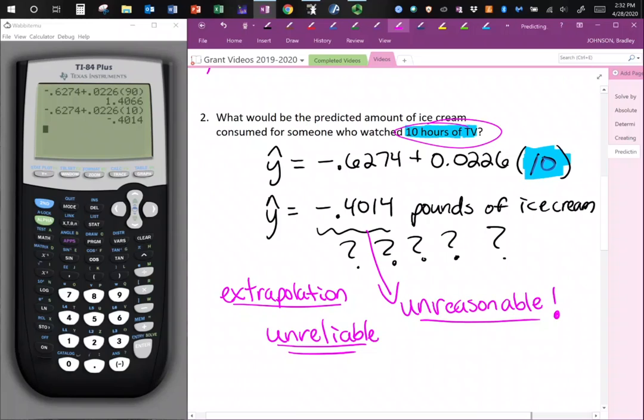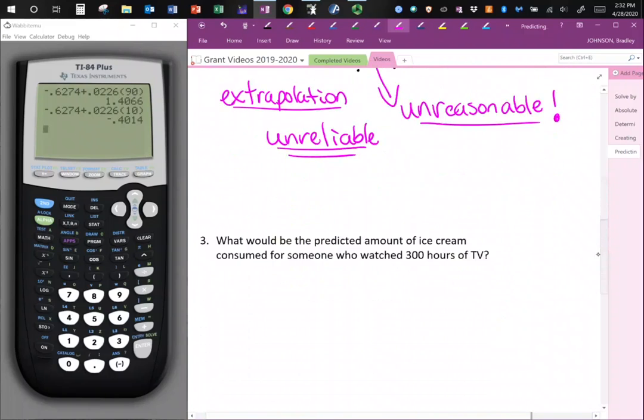So we have unreliable and unreasonable for this example. Predicting in this case did not make sense. It did not work out well because we were using extrapolation. But sometimes extrapolation will work out. So let's do another example.